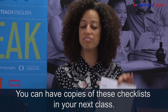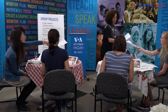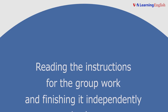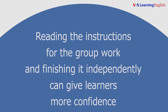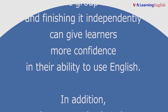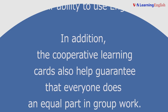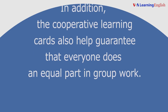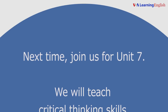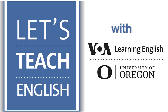You can have copies of these checklists in your next class. Reading the instructions for the group work and finishing it independently can give learners more confidence in their ability to use English. In addition, the cooperative learning cards also help guarantee that everyone does an equal part in group work. Next time, join us for Unit 7. We will teach critical thinking skills.